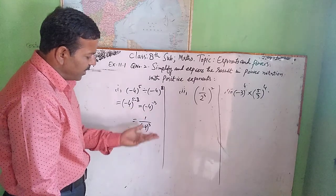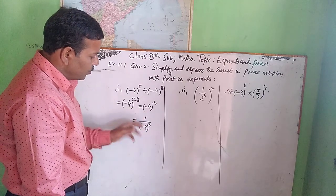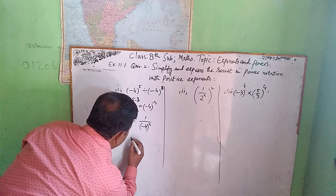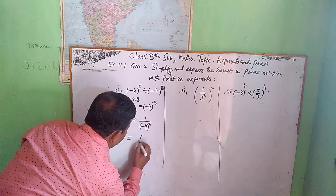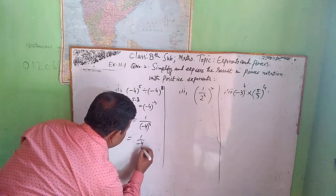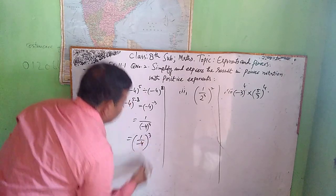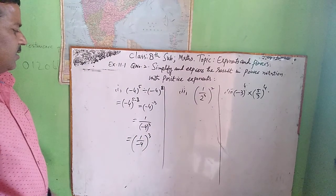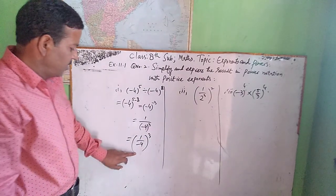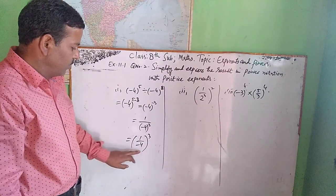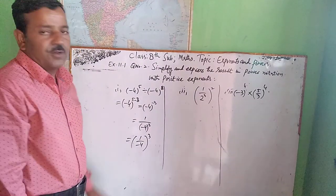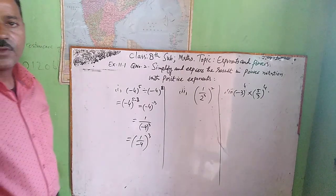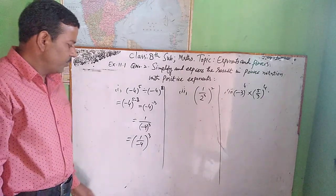Now the exponent is positive. We can write this as 1 divided by minus 4 whole raised to power 3. This is the result of this question.